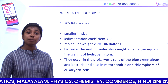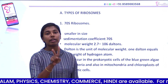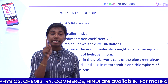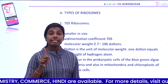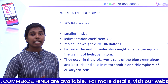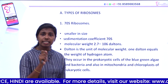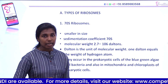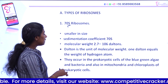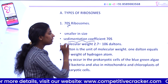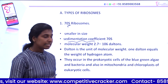Next are the types of ribosomes. There are mainly two types: the 70S ribosome and the 80S ribosome. The 70S ribosome is found in prokaryotes, while the 80S ribosome is found in eukaryotes. 'S' stands for Svedberg unit, also called the sedimentation coefficient.